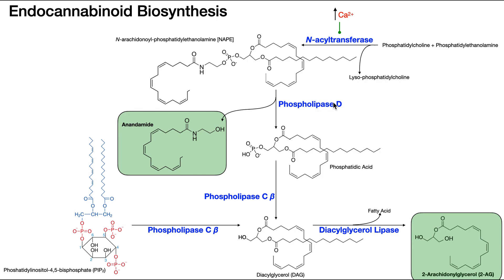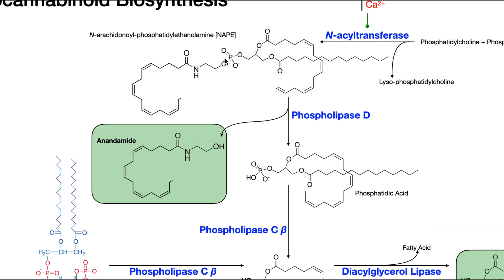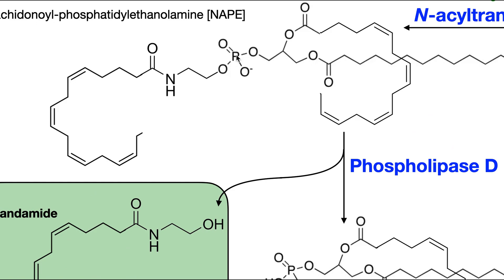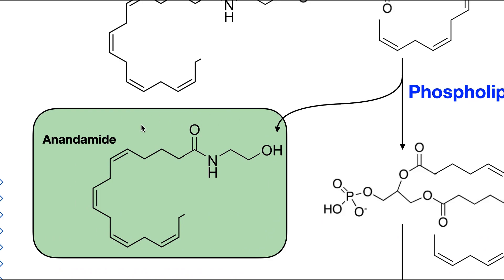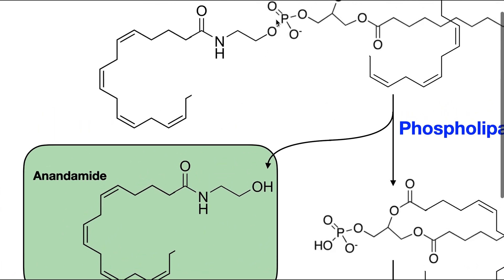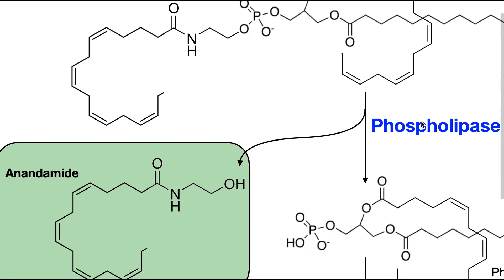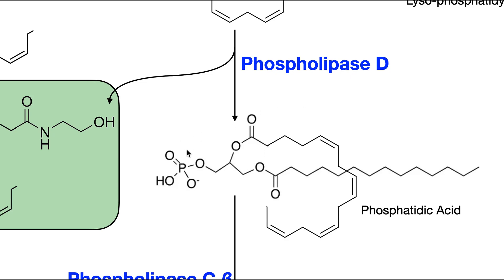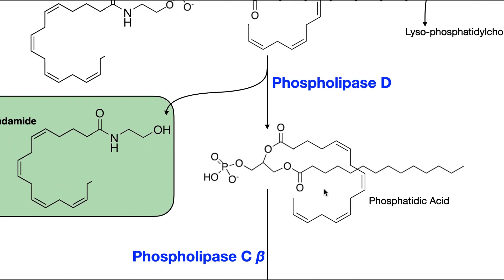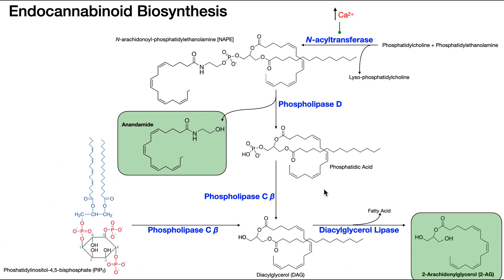Now phospholipase D can act on NAPE. What it does is it targets this bond right here between the phosphorus of the phosphate and this oxygen. So it cuts this bond through hydrolysis, and what that does is it yields anandamide. Notice if you split this bond right here, all this other stuff from the oxygen left comes off — that's anandamide. That's our first endocannabinoid. But also it gives you this structure, which is everything else to the right of that bond that was split — and that's phosphatidic acid, sort of the basic phospholipid.